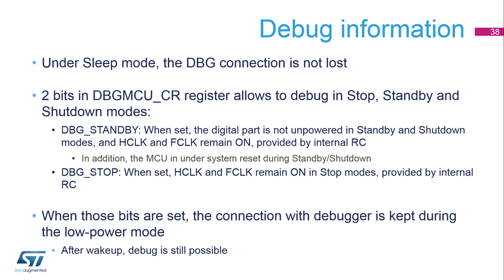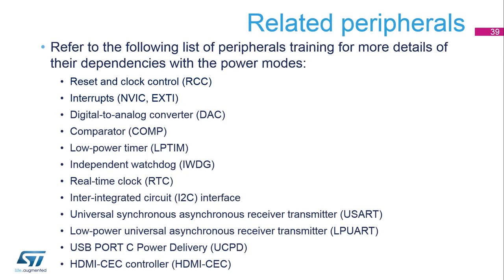The microcontroller integrates special means to allow the user to debug software in low-power modes. Two bits are available in the debug control register to allow debugging in stop, standby, and shutdown modes. When the related bit is set, the regulator is kept on in standby and shutdown modes, and the H-clock and F-clock are provided by an internal RC oscillator. This maintains the connection with the debugger during low-power modes and continues debugging after wake-up. Remember to clear these bits when the microcontroller is not under debug, because the consumption is increased in low-power modes. In addition to this training, you can refer to the reset and clock control interrupts trainings, as well as those for all the peripherals with wake-up from stop capability.